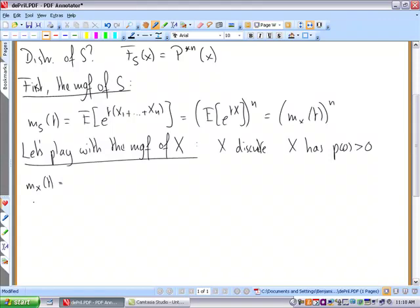So m_X(t) in that case will be the sum from x equal to zero to infinity of the exponential tx times the probability of having that outcome x.